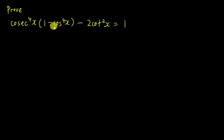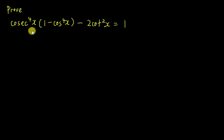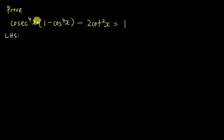So we have some power 4 here, and we want to prove the whole thing is equal to 1. We will always choose the side with more information, so in this case we will choose the left hand side. Just write left hand side here, because it's very hard to start from 1 and get all these terms.